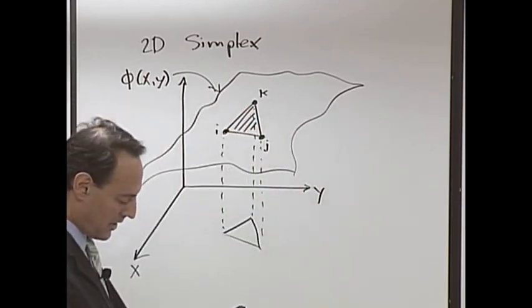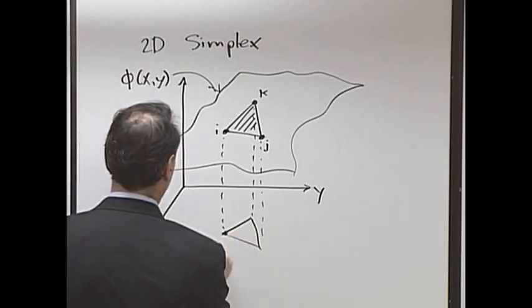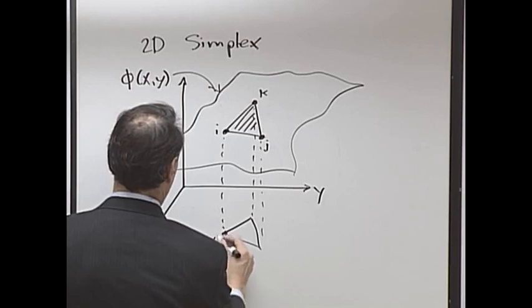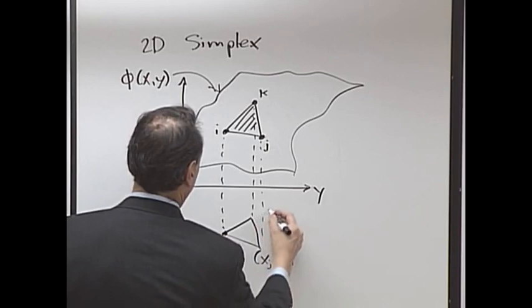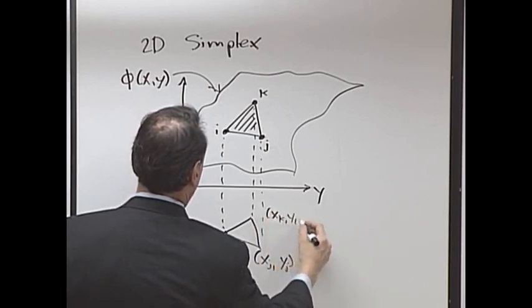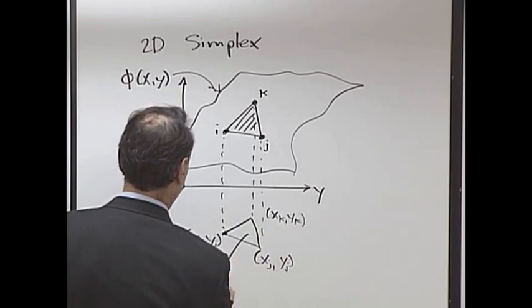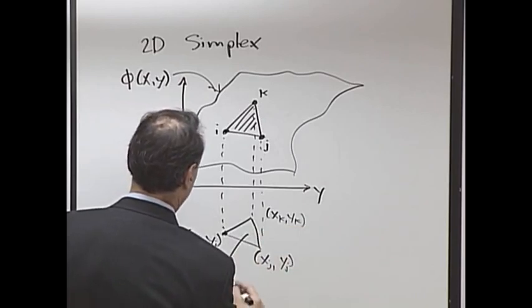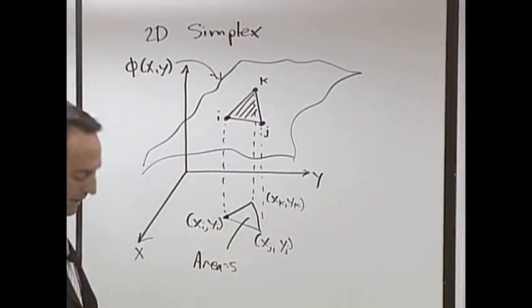There we go. These are our points. This point here is my xi, yi, and then you have xj, y sub j, and this point here is x sub k, y sub k. Here's my projection triangle. And by the way, the area of this triangle is s. Call it s. You'll see it play a role later.